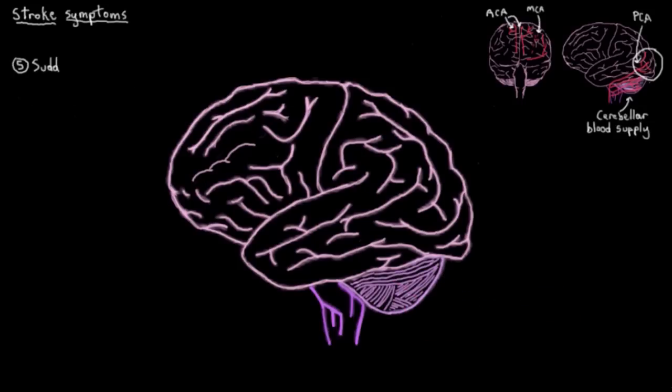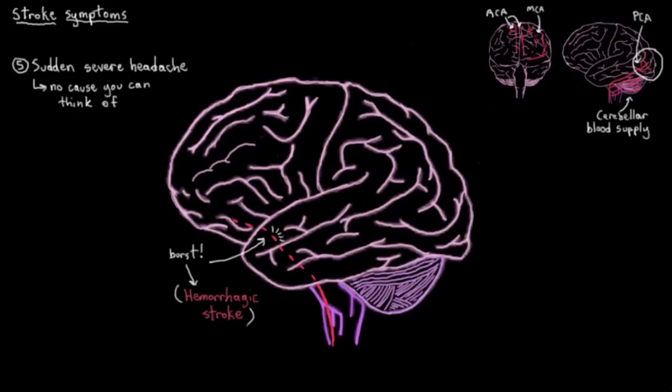Okay, so the last symptom I'll cover is just a sudden severe headache with no known cause. No cause that you can sort of think of. So you might remember that there's a subtype of stroke called a hemorrhagic stroke, which is where a blood vessel in the brain actually bursts and causes a stroke by loss of blood from the cerebral circulation. Well, this is probably not so surprising, but when a blood vessel bursts in your head, it hurts a lot. So you get a sudden severe headache with no explanation.